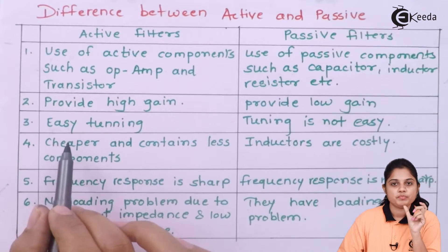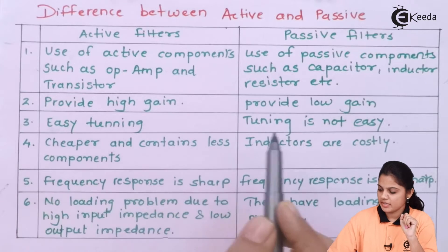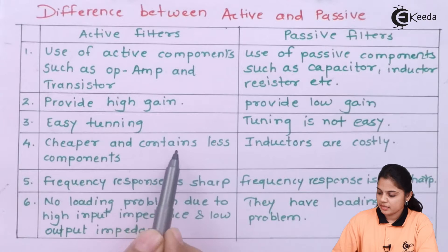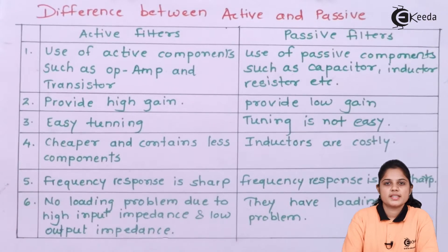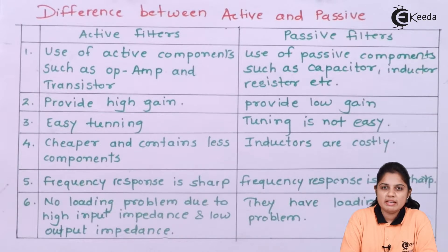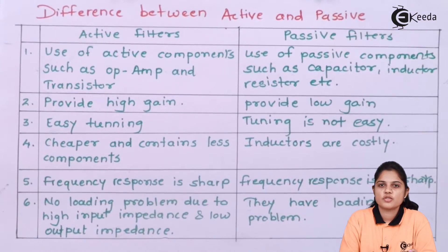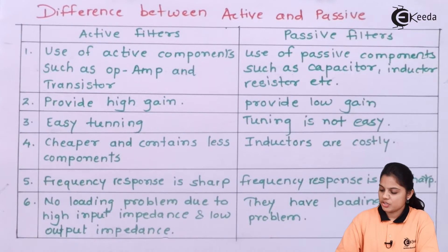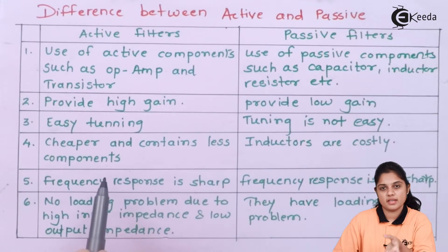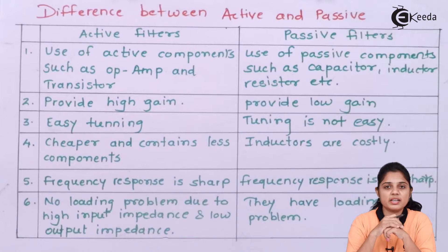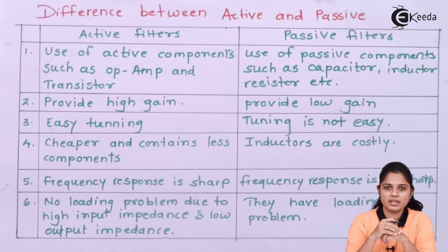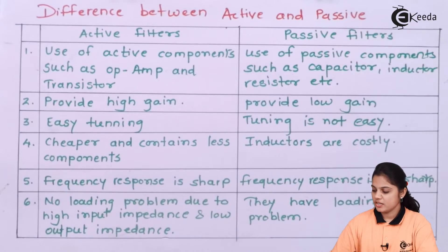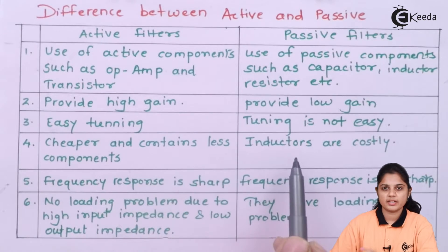So in an active filter, tuning of a frequency is easy, whereas in a passive filter, tuning is not easy. Fourth difference: active filters are cheaper and contain fewer components, since op-amps come in IC form and transistors are small components also available as ICs. But in passive filters, when inductors are used, they are large in size and require more space, and inductors are also costly.